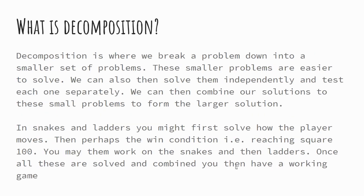Once we've abstracted and got our rough idea, we can decompose our problem. Decomposition is the idea of taking a much larger problem and breaking it down into a number of smaller problems, because smaller problems are easier to solve. We can then solve them independently — if we break a large problem into five smaller parts, we solve and test each of those five parts independently, making it a much more manageable process. Once we've solved all the smaller problems, we can piece our solutions together to form the answer for that program.